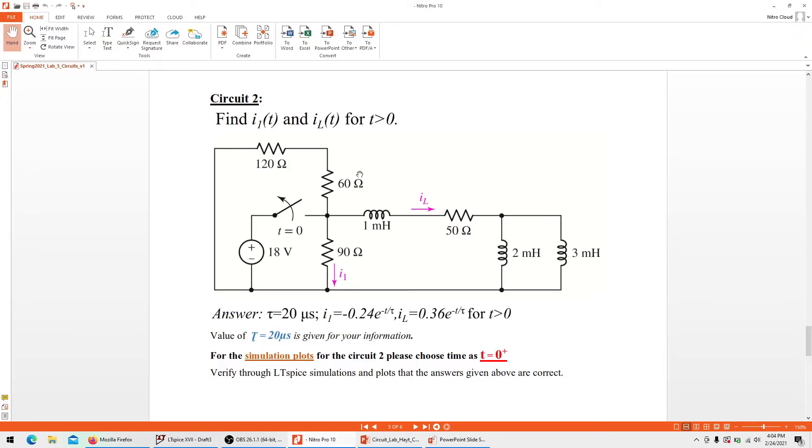Based on exactly the same thing, within the lab manual we have this circuit configuration. Here the answers are: current i1, which is through 290 ohms, is 0.24e^(-t/tau), and the current through inductor iL is 0.36e^(-t/tau) for t greater than zero.